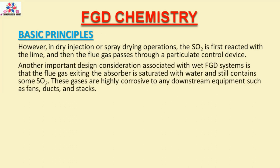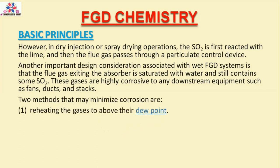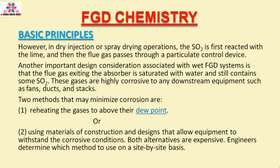Another important design consideration associated with wet FGD systems is that the flue gas exiting the absorber is saturated with water and still contains some SO2. These gases are highly corrosive to any downstream equipment such as fans, ducts, and stacks. Two methods that may minimize corrosion are: (1) reheating the gases to above their dew point, or (2) using materials of construction and designs that allow equipment to withstand the corrosive conditions. Both alternatives are expensive, and engineers determine which method to use on a site-by-site basis.